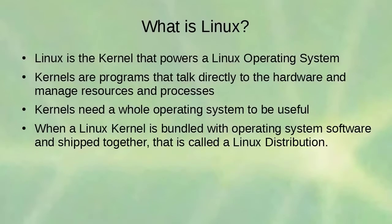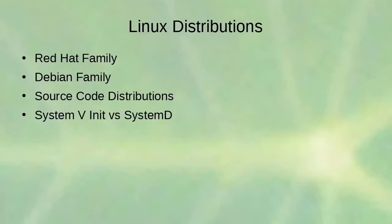When a Linux kernel is bundled with operating system software and shipped together, that is called a Linux distribution. In the Linux world there are many different families of distributions — the Red Hat family, the Debian family, source code distributions, and others.